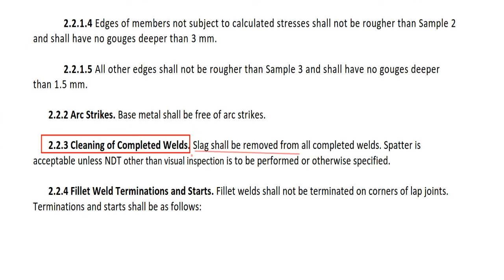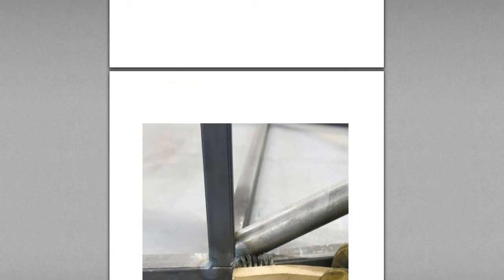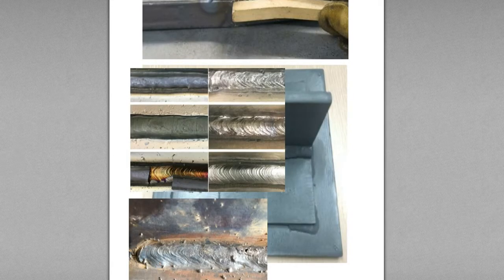I'm going to read out these sentences and give you the explanation about slag and spatter. Slag shall be removed from all completed welds. Spatter is acceptable unless an entity other than visual inspection is to be performed or otherwise specified. So, slag — do you know what slag is? I'm going to show you this picture of the slag. Slag means this is SMAW after welding.